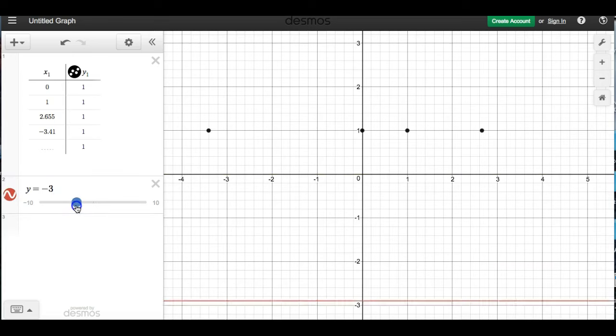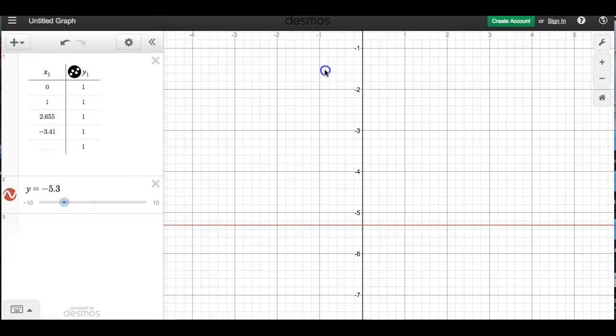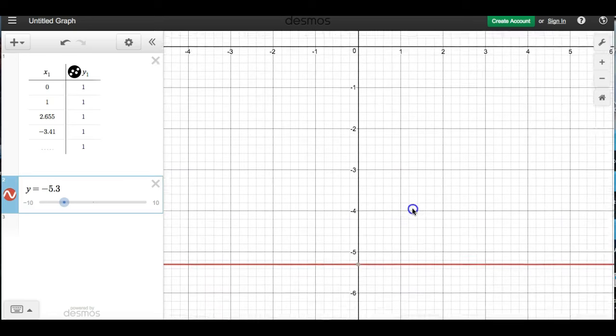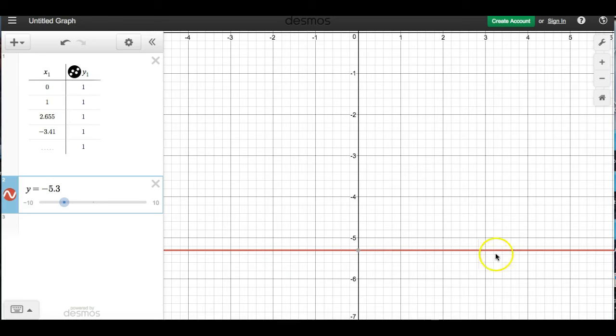If y needs to equal negative 4 or negative 5.3, that's where the line is going to go. Here's where y is always negative 5.3 along this line. And you can see if y equals a number, then it is a horizontal, left to right, like the horizon, horizontal line at that point. Because this is the line where y will always be negative 5.3.